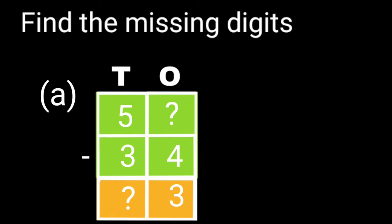Let's do question A. Here the digit of bigger number at one's place is missing. Find the bigger digit at one's place. We will add this smaller digit to the difference. 4 plus 3 is equal to 7. So our missing digit is 7.